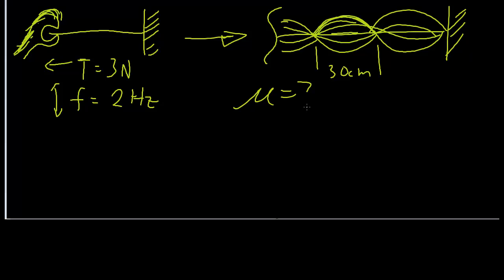Let's talk strategy. What can we relate mu to? Well, we know that the phase velocity is given by t over mu square root. So we know t already. So let's check. We need to know v. How else do we know v?